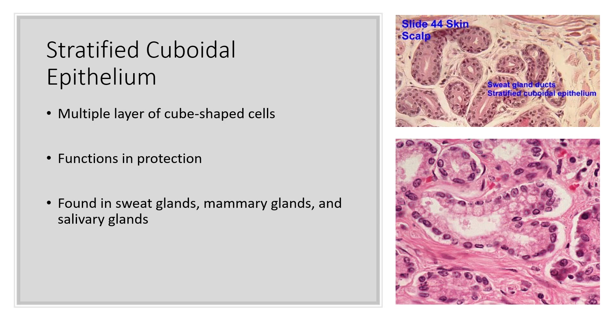Next is stratified cuboidal epithelium. This is a multiple layer of cube-shaped cells that function in protection. You can find these in sweat glands, mammary glands, and even your salivary glands.